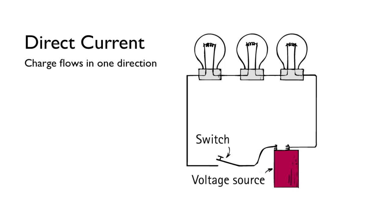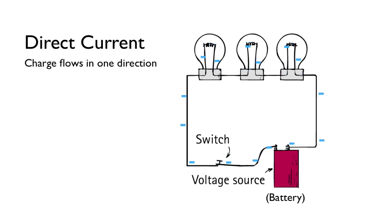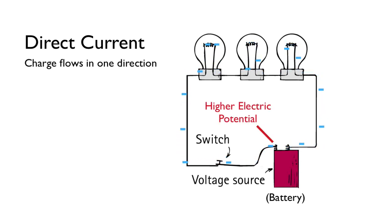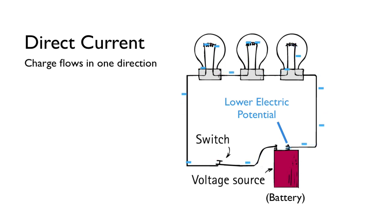For a good example, connect a simple circuit to a battery. The charge flows through the circuit in one direction, from the higher electric potential to the lower electric potential.